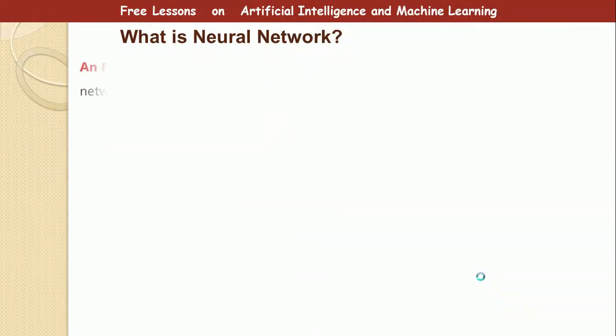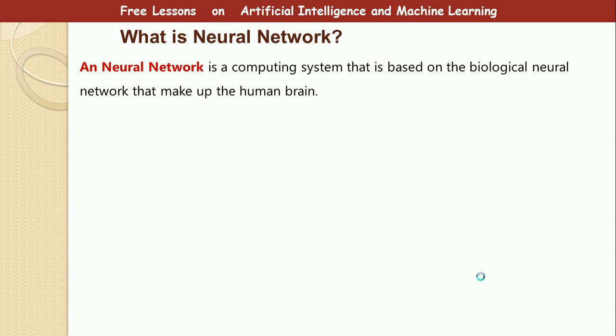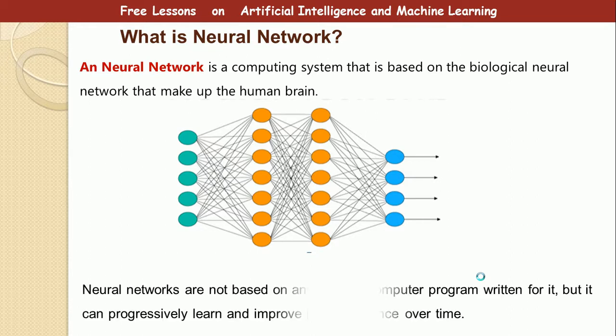What is a neural network? As you can see, a neural network is a computing system based on the biological neural network that makes up the human brain. So basically, a neural network is a subcomponent of an artificial intelligence system that tries to mimic how the human brain works. Neural networks are not based on any specific computer programs written for it, but can progressively learn and improve its performance over time. So the diagram you see here is an example of a neural network made up of connections and made up of nodes.